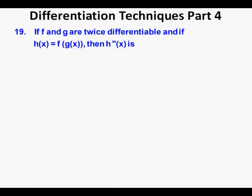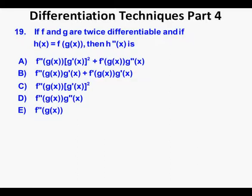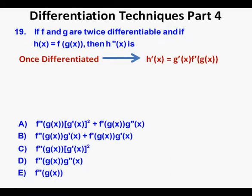Problem 19: If f and g are twice differentiable and h(x) = f(g(x)), then h''(x) is — and we're given five multiple choice options A through E. This is a composition of functions and therefore a chain rule application. Problem 16 in the Part 3 video is in some ways a prequel to this problem. h'(x) will be the derivative of the inner function, g'(x), times f'(g(x)).